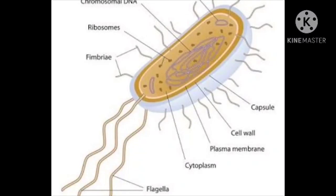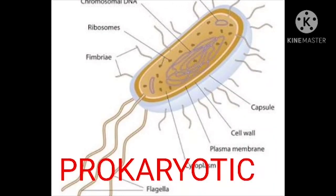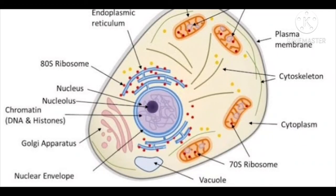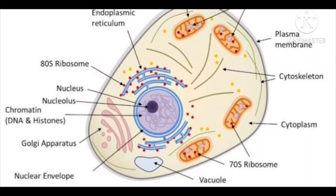Now let us talk about prokaryotic and eukaryotic cells. The nucleus of the bacterial cell is not well organized like cells of multicellular organisms — there is no nuclear membrane. Cells having nuclear material without a nuclear membrane are termed prokaryotic cells, and the organisms with these kinds of cells are called prokaryotes — examples include bacteria and blue-green algae. Cells like onion cells and cheek cells, having a well-organized nucleus with a nuclear membrane, are designated as eukaryotic cells. All organisms other than bacteria and blue-green algae are called eukaryotes.